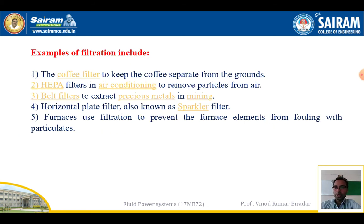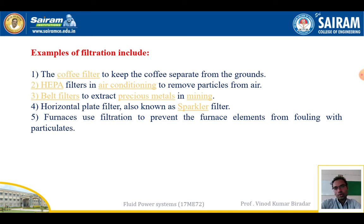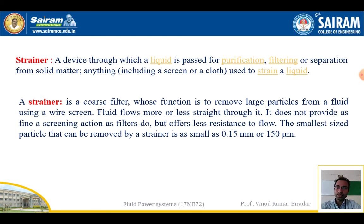Examples of filtration include: a coffee filter to keep coffee separate from the grounds; a HEPA filter in air conditioners to remove particles from air; belt filters to extract precious metals in mining; and horizontal plate filters known as sparkler filters. Furnace filters are also used to prevent particulates from entering furnace elements.